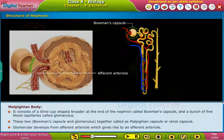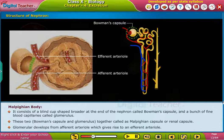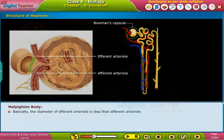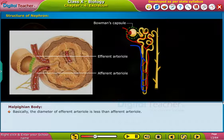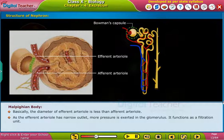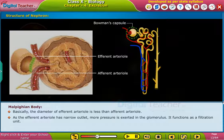The glomerulus develops from an afferent arteriole, which gives rise to an efferent arteriole. The diameter of the efferent arteriole is less than that of the afferent arteriole. As the efferent arteriole has a narrow outlet, more pressure is exerted in the glomerulus, and it functions as a filtration unit.